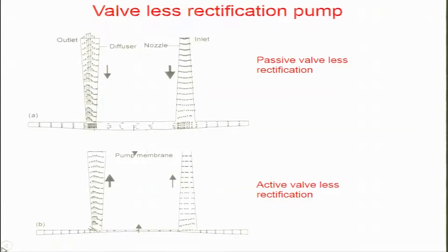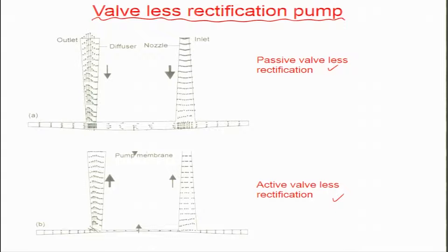The first type of fluid actuator which is going to cause pumping comes in the form of valveless rectification pumps, where there can be either a passive design or an active design. In this particular case, there is a change in the cross-sectional area from the inlet side to the outlet side. The inlet side is like a nozzle, so the area suddenly increases and therefore the increase in area would signify a reduction in velocity.